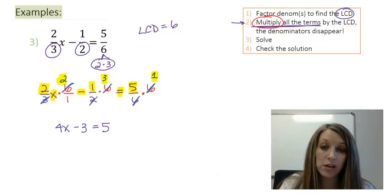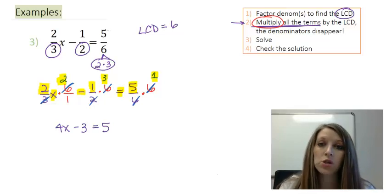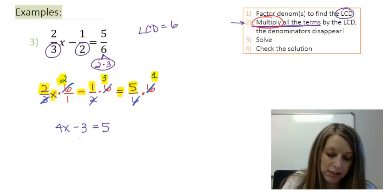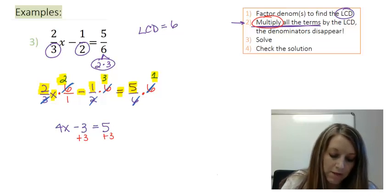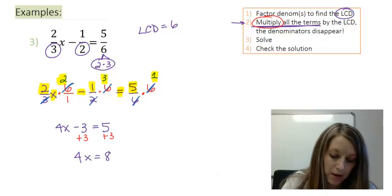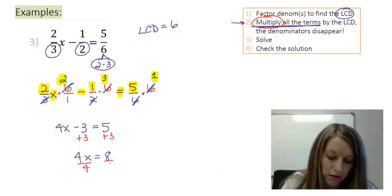So I have changed this from a fraction problem just to a linear equation. And now I can solve it by isolating my variable. So my first step is to add three from both sides, leaving me with four x is equal to eight. Divide by four gives me my final answer of x is equal to two.